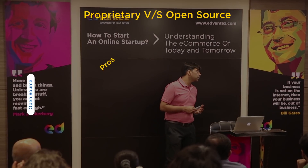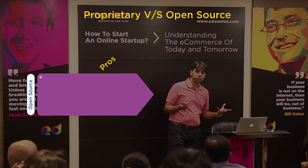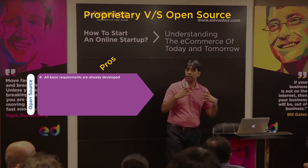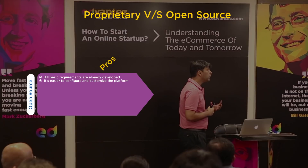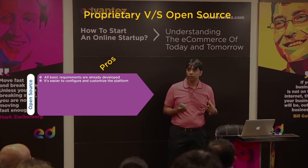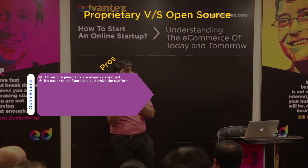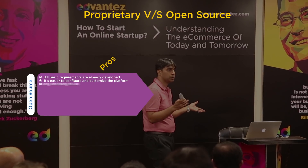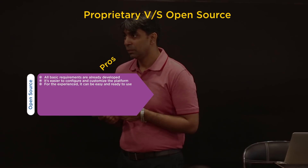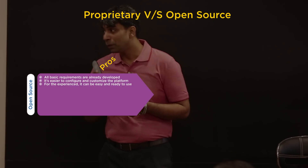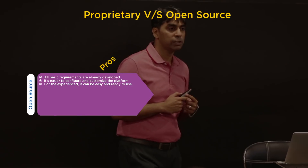In open source, all basic requirements are already developed — somebody's done some work for you. It's easier to configure and customize because nobody's questioning you; you can take things out, add things. For experienced developers, it's easy and ready to use. The problem is if you're not experienced, it's very hard to understand that code.